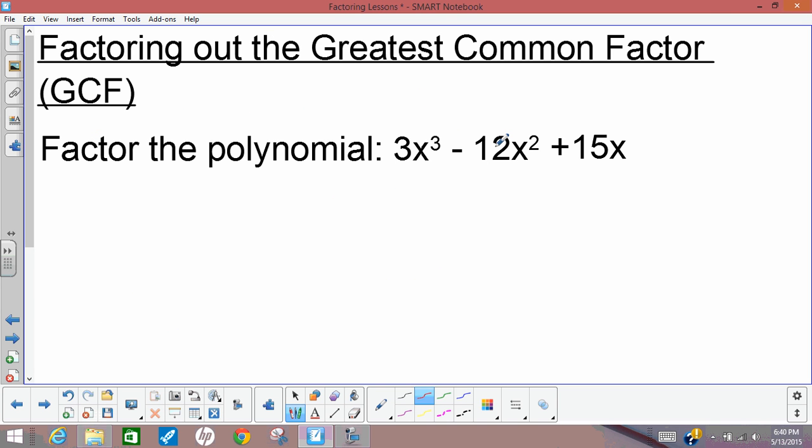So when we factor a polynomial, we're doing sort of the opposite of the distributive property. I'm trying to pull out what it is we distributed in the first place. And one way to do that is to find a greatest common factor.